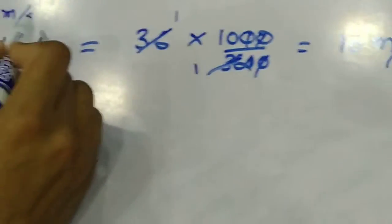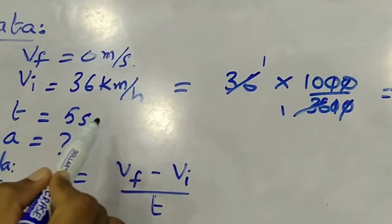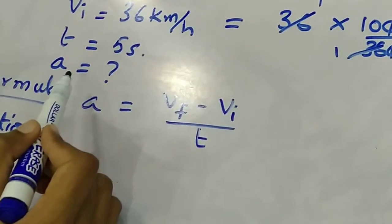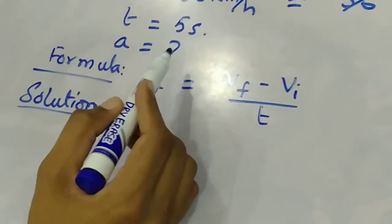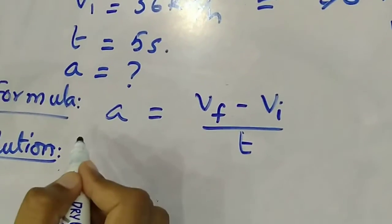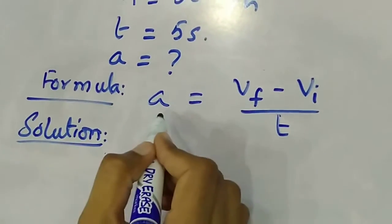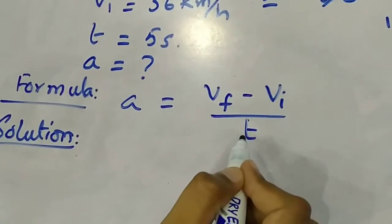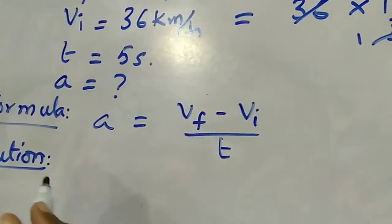The time t is 5 seconds. We need to calculate the acceleration. Remember that deceleration is negative acceleration, which acts in the opposite direction of the motion. Okay, let's use the simple formula: a equals Vf minus Vi upon t, because these three things are available.